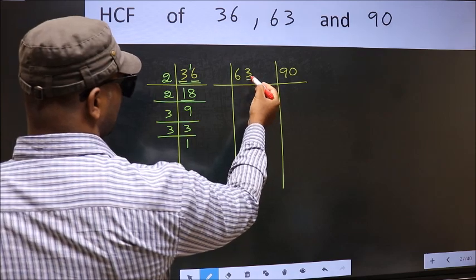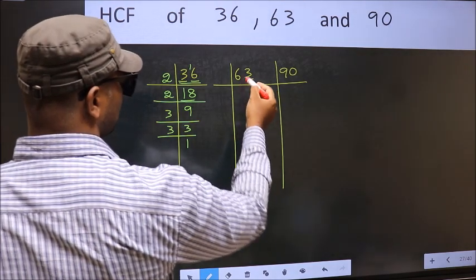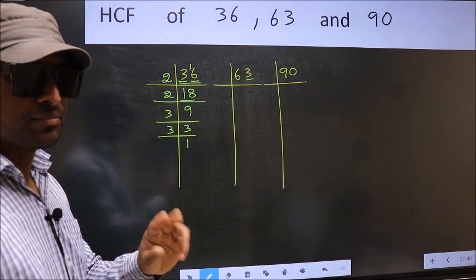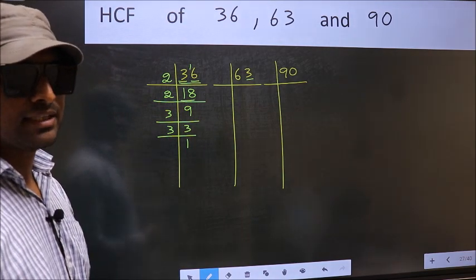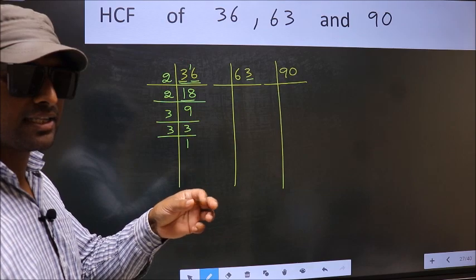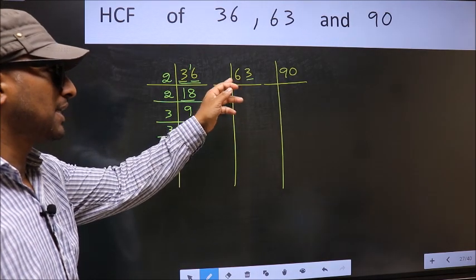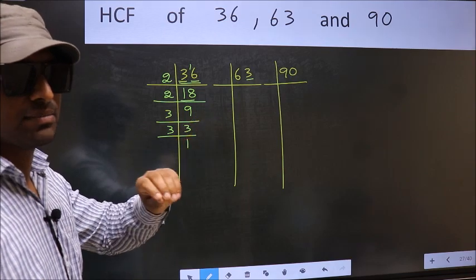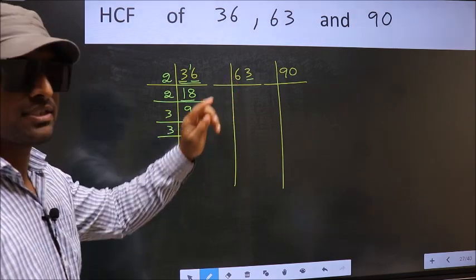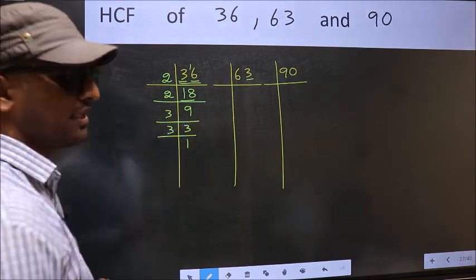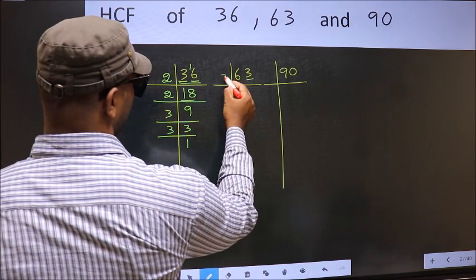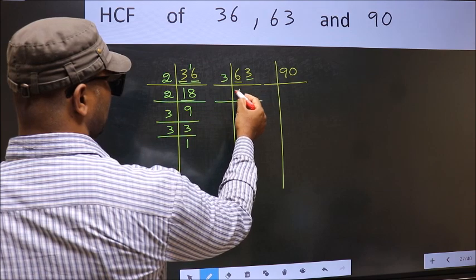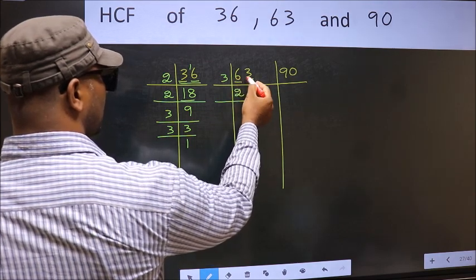Last digit 3, not even, so not divisible by 2. Next prime number 3. To check divisibility by 3, for that add the digits. 6 plus 3, we get 9 and 9 is divisible by 3. So this number also divisible by 3. So take 3. First number 6. When do we get 6 in 3 table? 3 times 2 is 6.